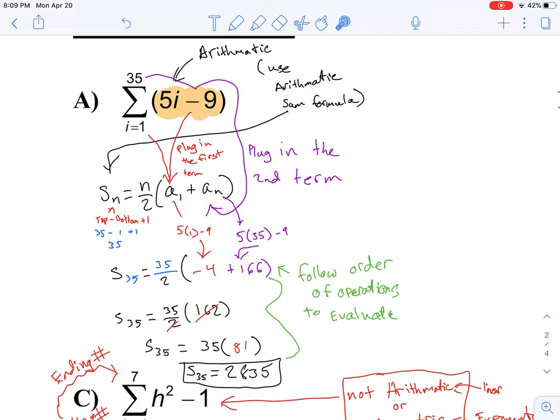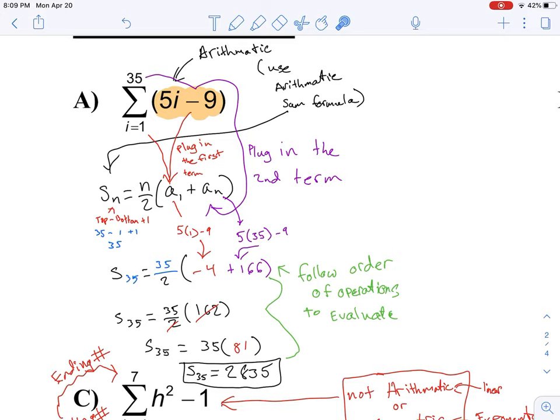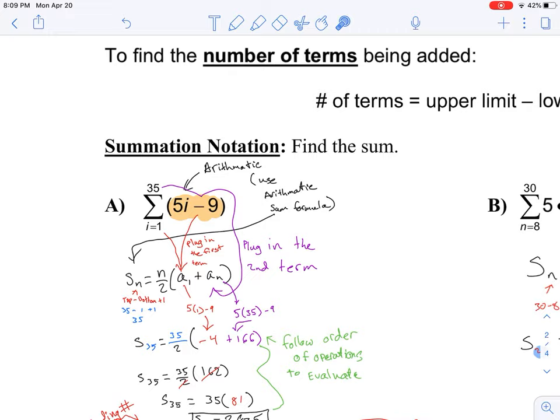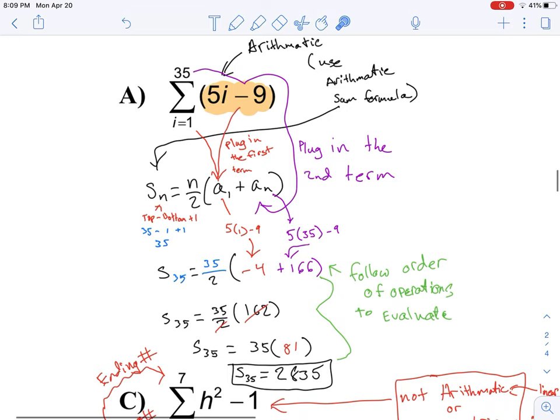So here's our arithmetic sum formula. I know there's a lot of lines and stuff going on. I'm going to try my best to be clear at what everything is pointing to and kind of how that's affecting it. I've tried to color coordinate things for you. Our number of terms, we're taking our top minus our bottom plus 1. We're using our 35 minus 1 plus 1. 35 minus 1 is 34, plus 1 is 35. So for this one, we end up with 35.